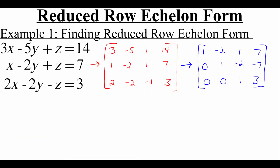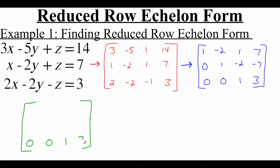So in our last video I showed you the process to take a system of equations, turn it into an augmented matrix, and then put it in row echelon form. Now in this video I'm going to show you the steps to take this row echelon matrix and put it in reduced row echelon form. We want that stair step pattern of ones along the main diagonal and zeros everywhere else. I always like to start on the bottom, because the bottom row should already look like it needs to in reduced row echelon form.